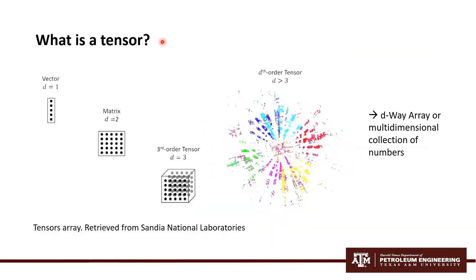So first, what is a tensor? A tensor is a d-dimensional array or multi-dimensional collection of numbers. For instance, vectors can be described as first order tensors, matrices as second order tensors, and we can also have a third order tensor as you can see in the figure. Nevertheless, a tensor can also have dimensions greater than 3, as you can observe here.